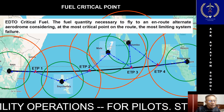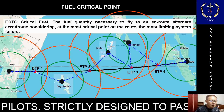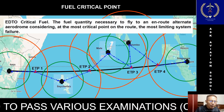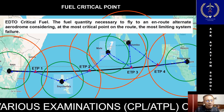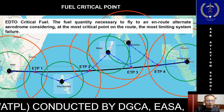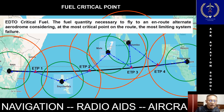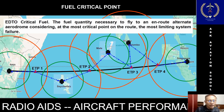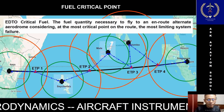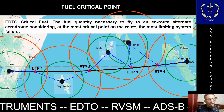In my last class we discussed about the equitime point. The equitime point is a point on route from where it takes equal amount of time to proceed to two suitable alternates. Out of these equitime points there will be one equitime point from where it takes the maximum amount of fuel to divert to the suitable alternate, after considering the three scenarios — that is one engine failure, pressurization failure, or a combination of both. That particular ETP is known as the critical point.